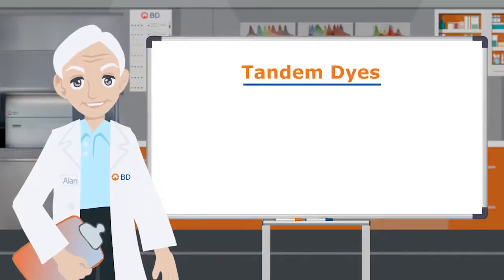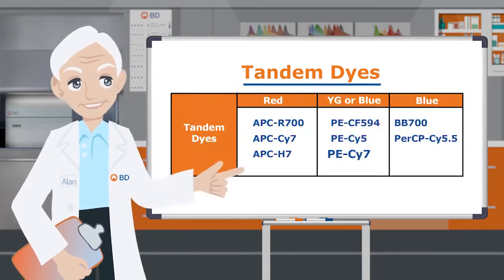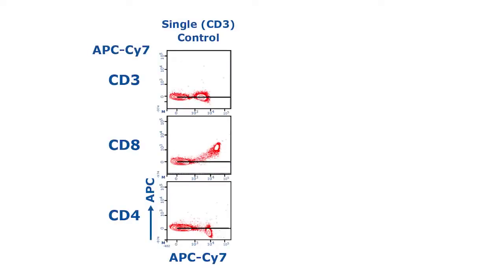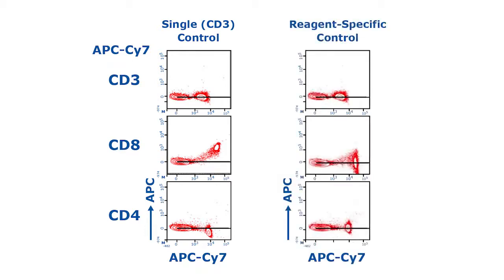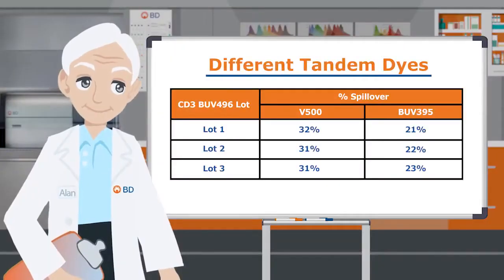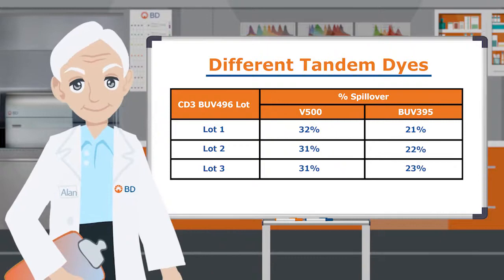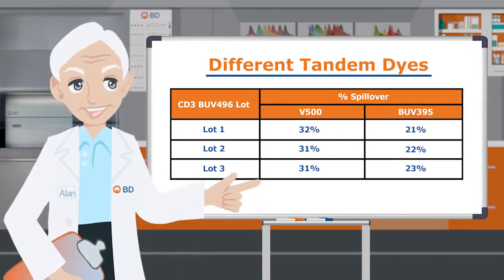The second related principle pertains to tandem dyes, such as PE-Cy7 and APC-Cy7, for which spillover properties may change when the same tandem dye is conjugated to different markers. In this example, the spillover values calculated using the CD3 APC-Cy7 single stain control are not accurate for the CD8 or CD4 APC-Cy7. In these cases, it is important to use reagent-specific compensation controls as shown in the right column. Similarly, when different lots of the tandem dye are conjugated to the same marker, you can also have different spillover values. In these cases, lot-specific controls should be used to accurately calculate compensation.